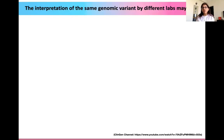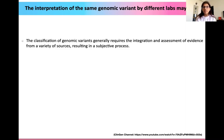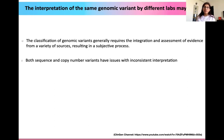By now, having done SNV variation and interpretation by the ACMG guidelines, you would have understood that variant interpretation guidelines and classification of genomic variants generally require the integration and assessment of evidence from a variety of sources — it could be literature, it could be computational — and hence this process could be very subjective in nature. Any variant, whether a sequence variation or a copy number variant, could have issues with inconsistent or discordant interpretations between labs.